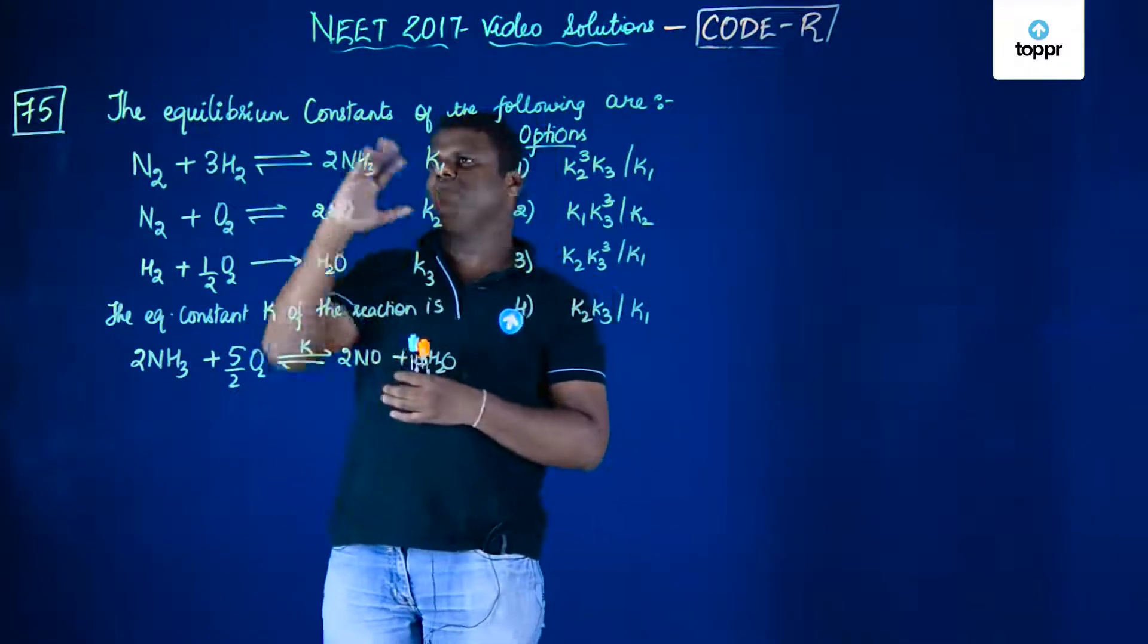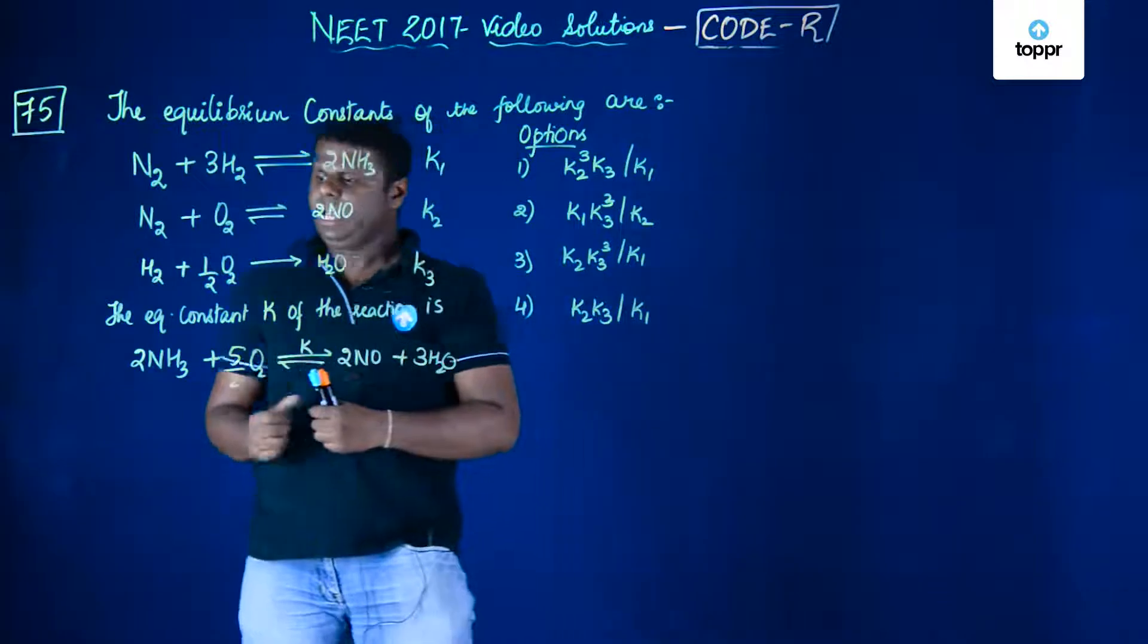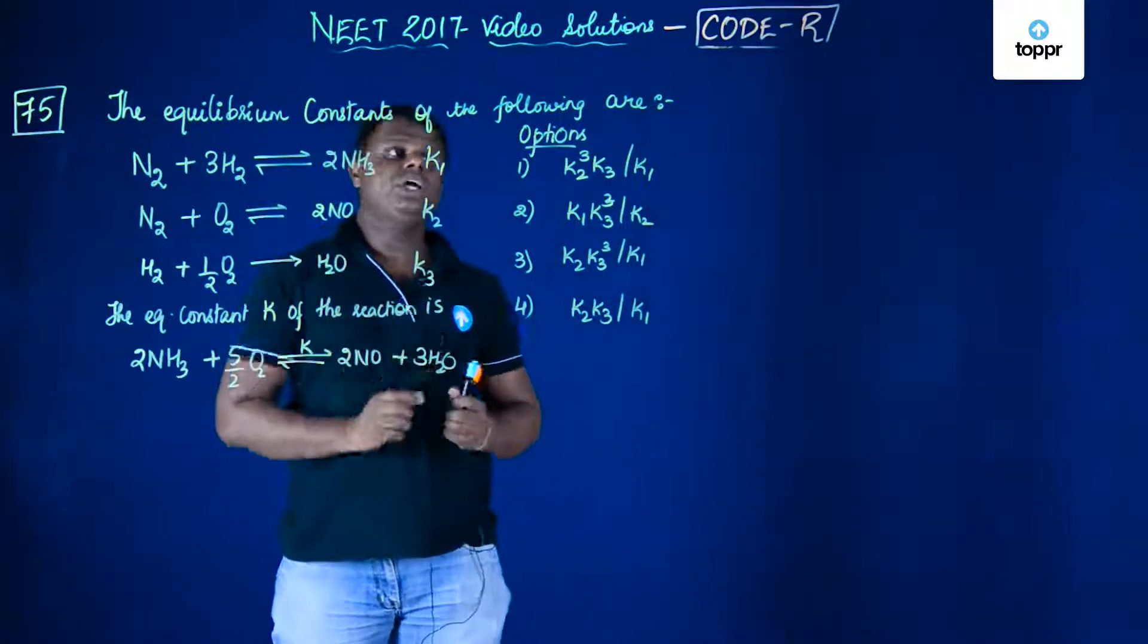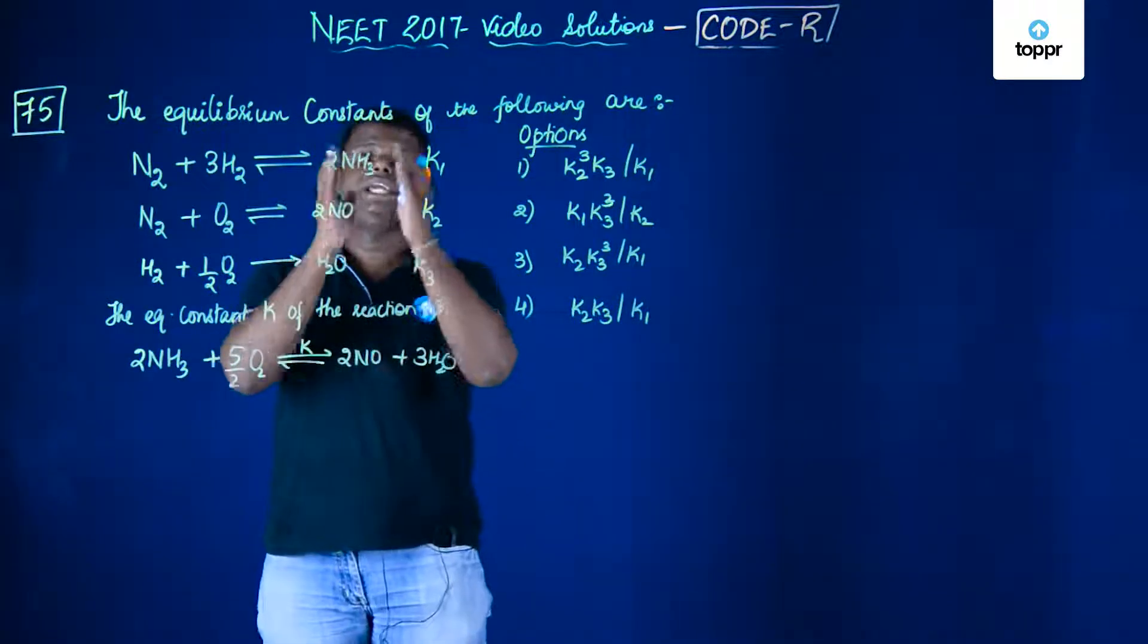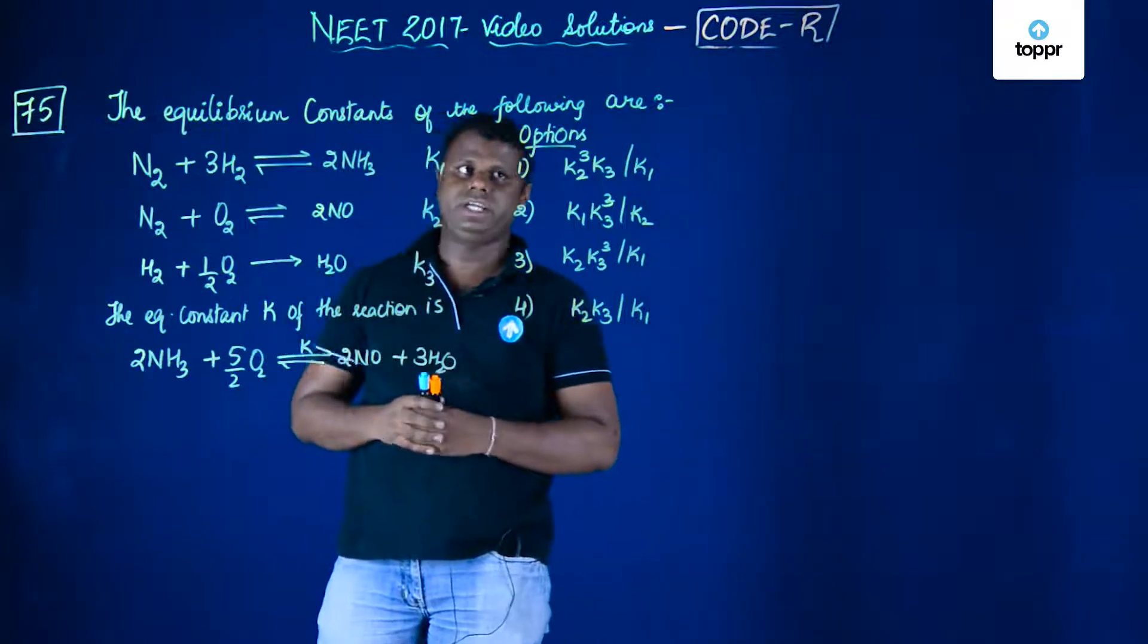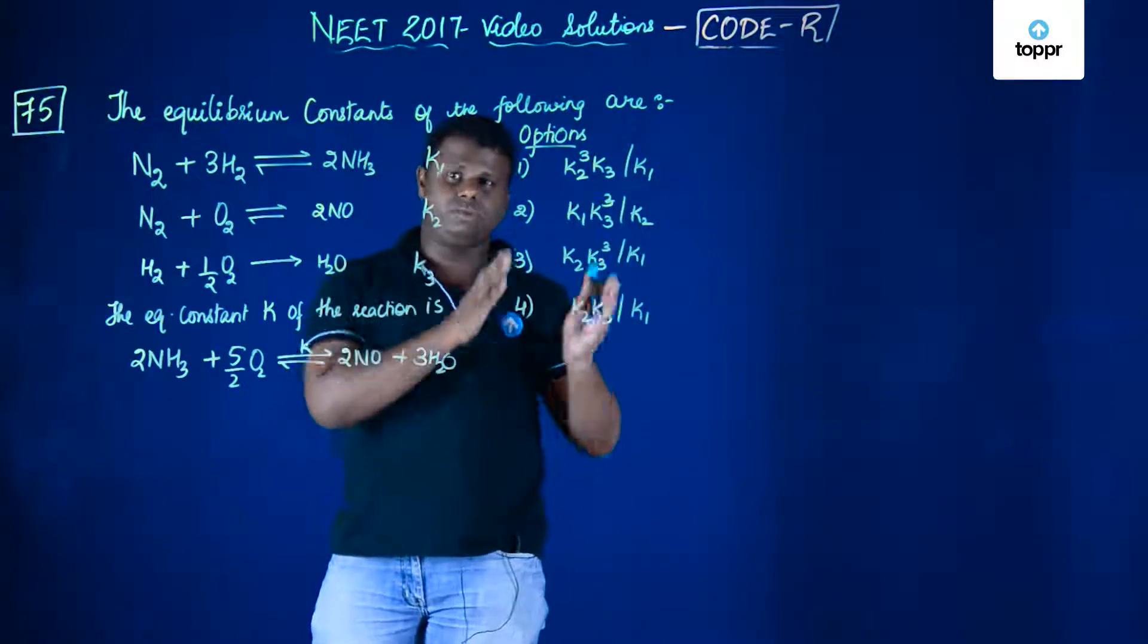You have been given a certain set of equations and a final equation for which you are supposed to calculate the k value, that is the equilibrium constant, and you have been given a variety of options.